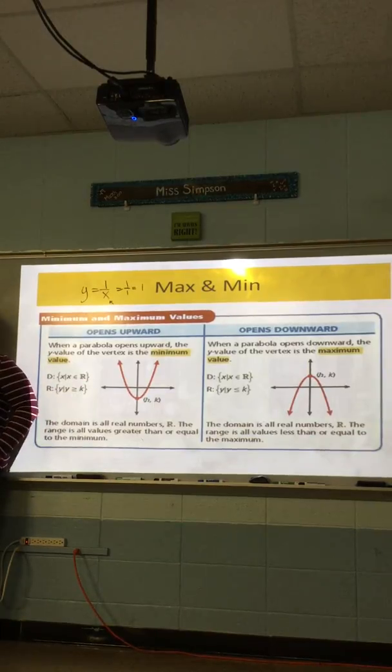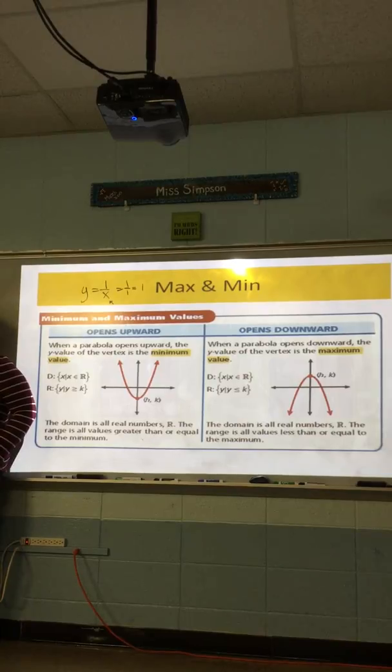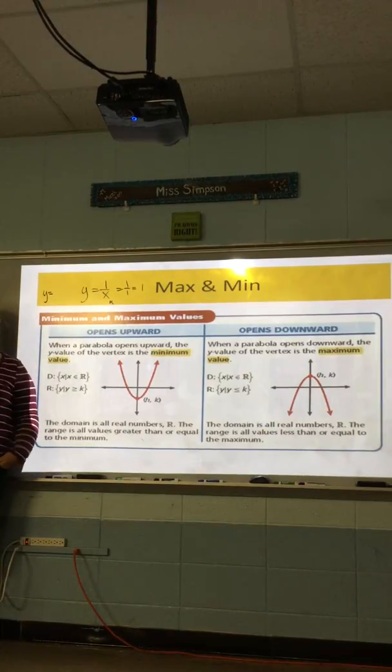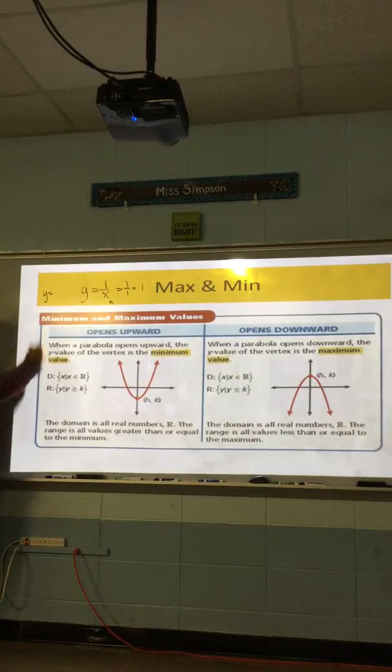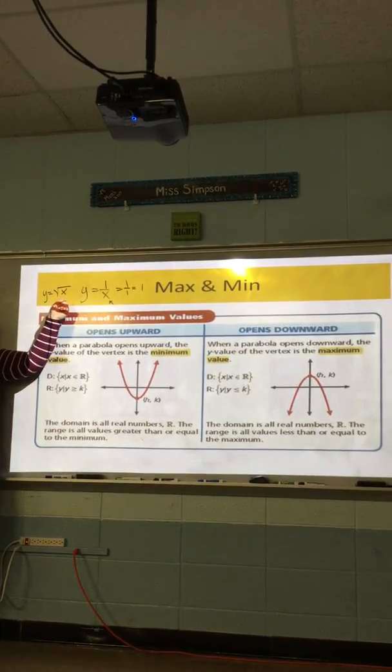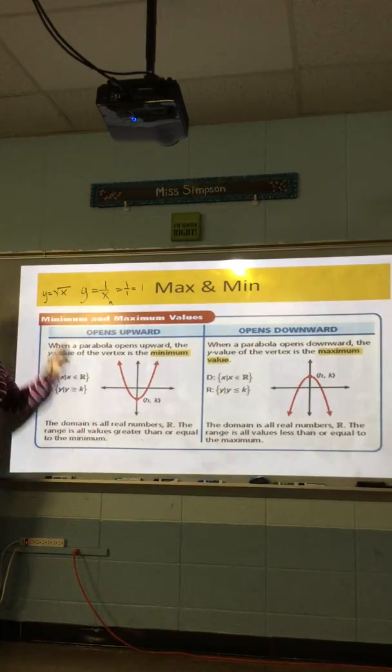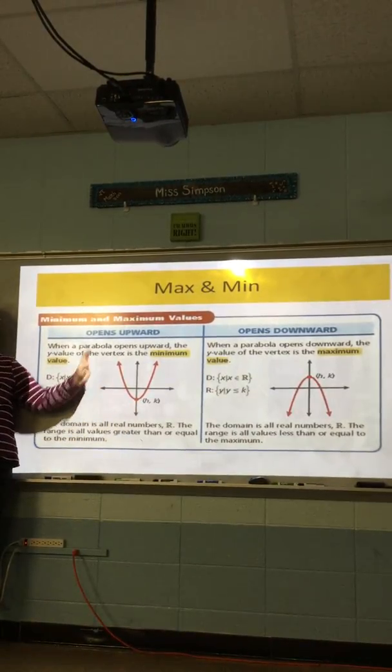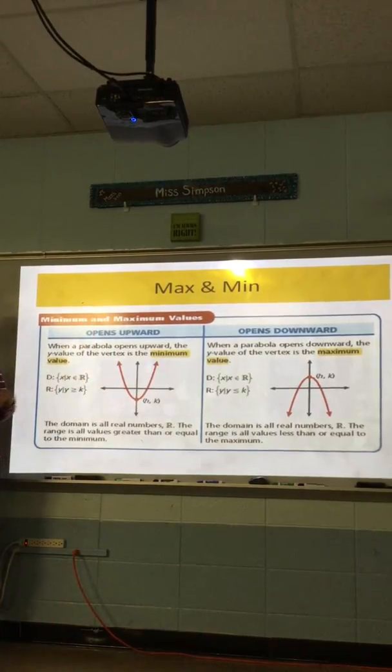Can you think of any other case where there would be a restriction? What's another parent graph? We had the square root. Is there anything that I can't put in there? Negative numbers. If I put zero in there, what's the square root of zero? Zero. And what if I put in negative one? It's going to domain error, undefined. Now, the good thing about this is when we're working with quadratics, parabolas, it's always going to be all real numbers. There's nothing I can't put in here that's going to make it undefined. So, for now, it's going to be all real numbers.